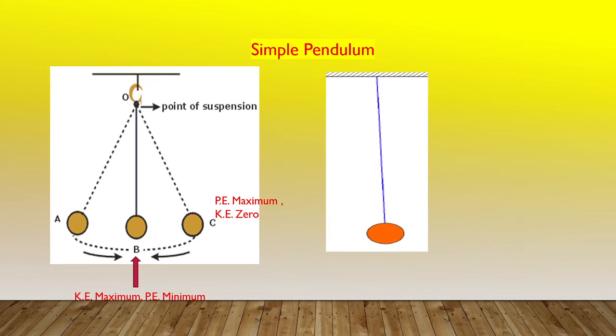A simple pendulum is realized by suspending a small metallic sphere by a thread hanging from a fixed support like a stand. This figure shows a simple pendulum in which a bob of mass M is suspended from the fixed support O through the light string of length L.